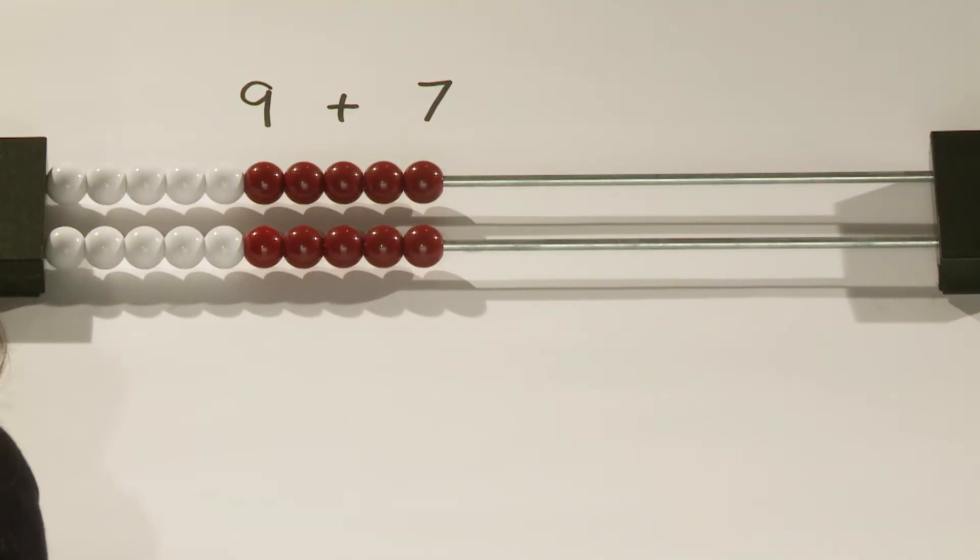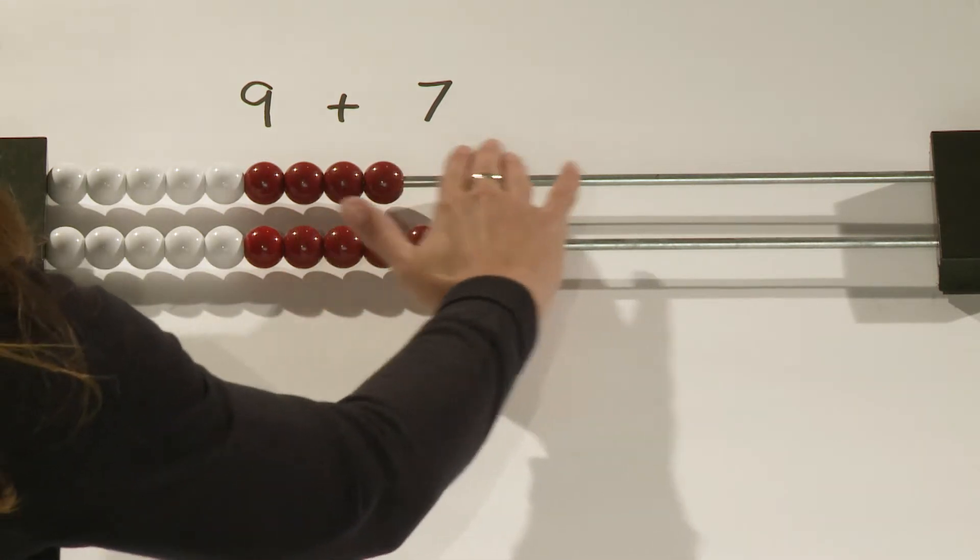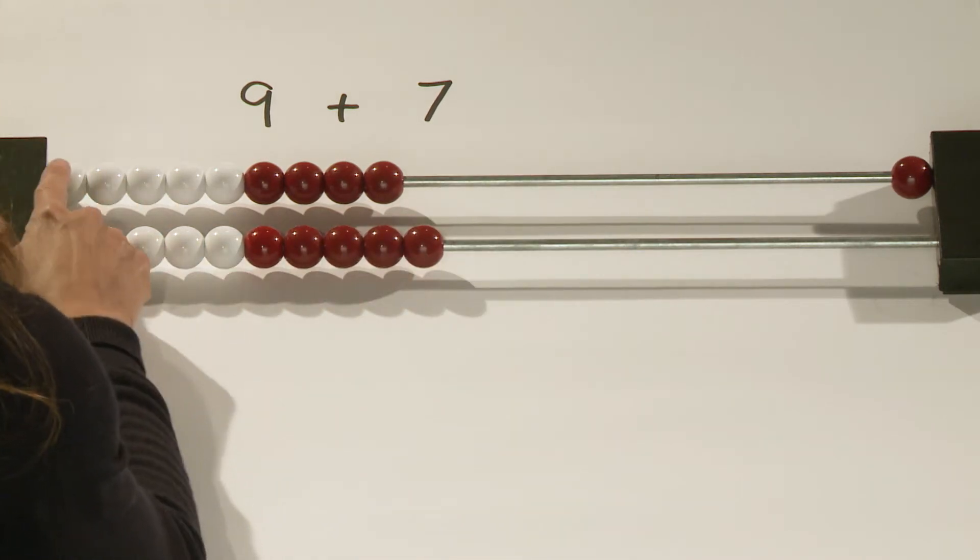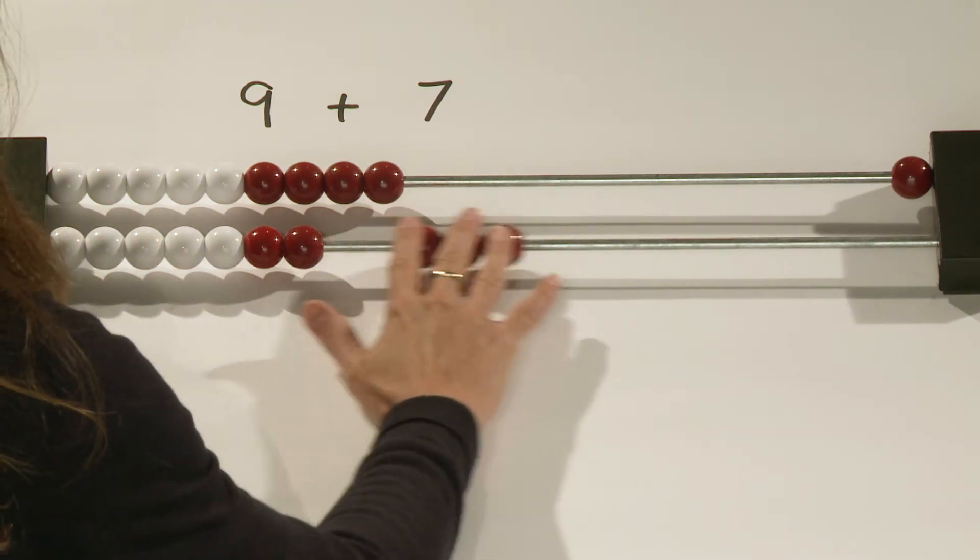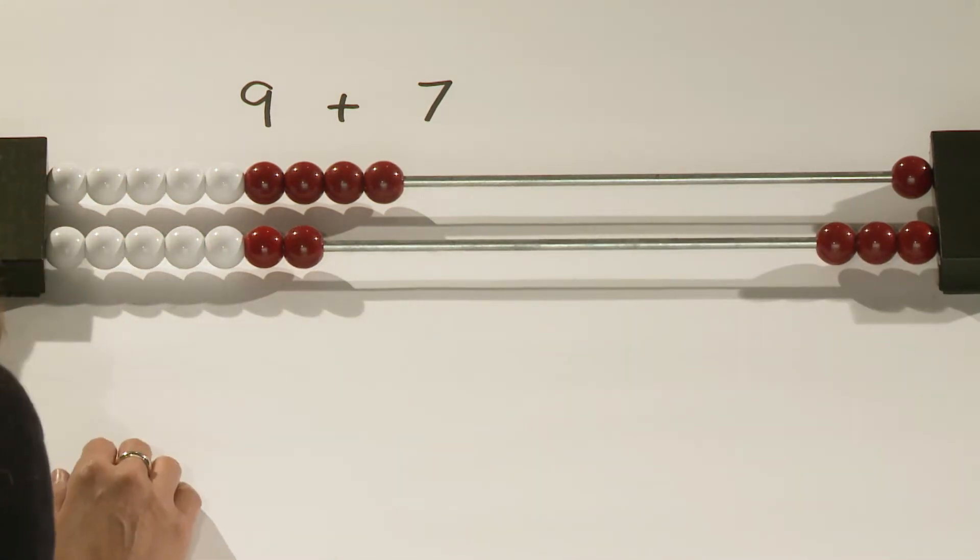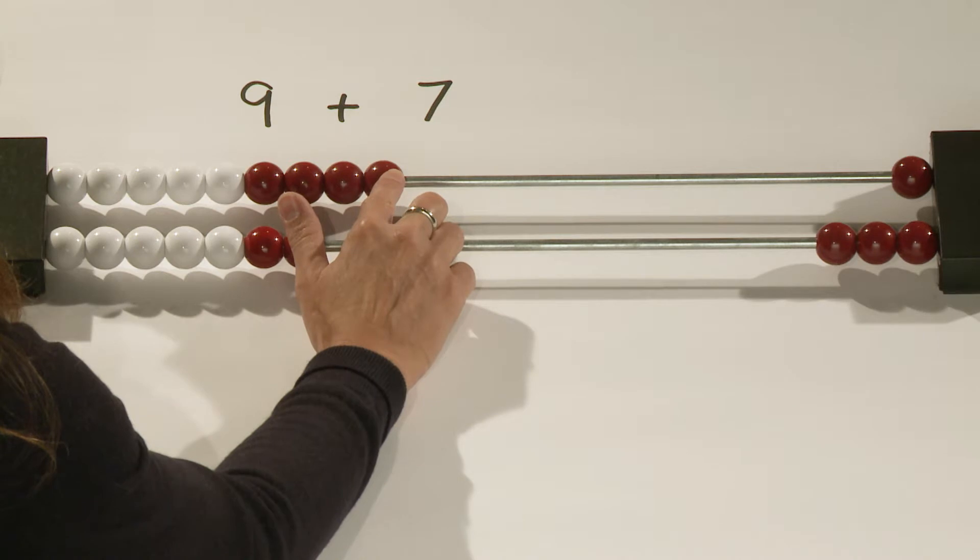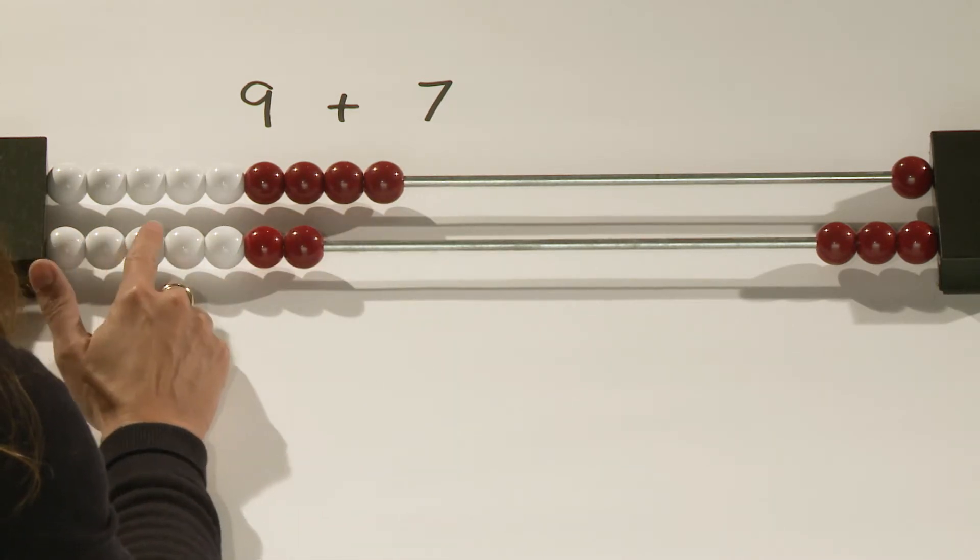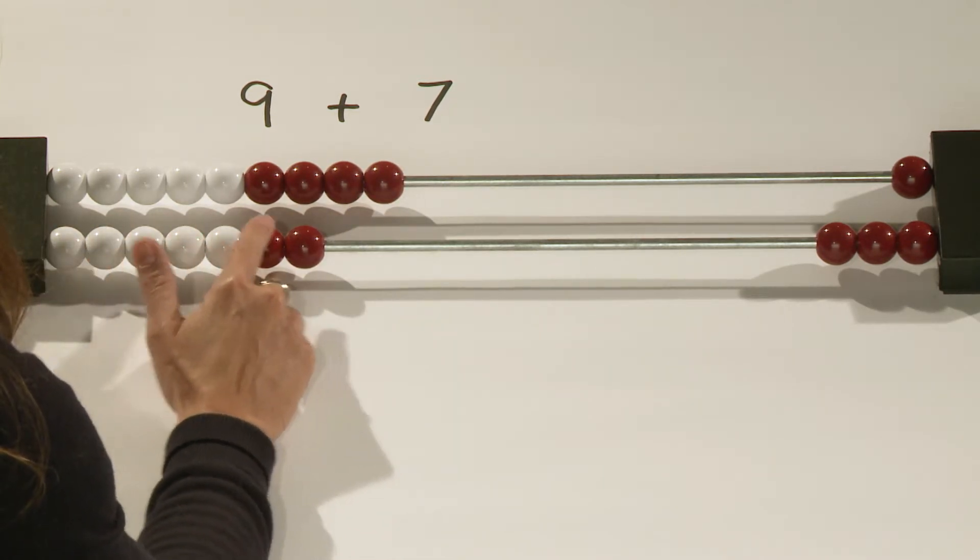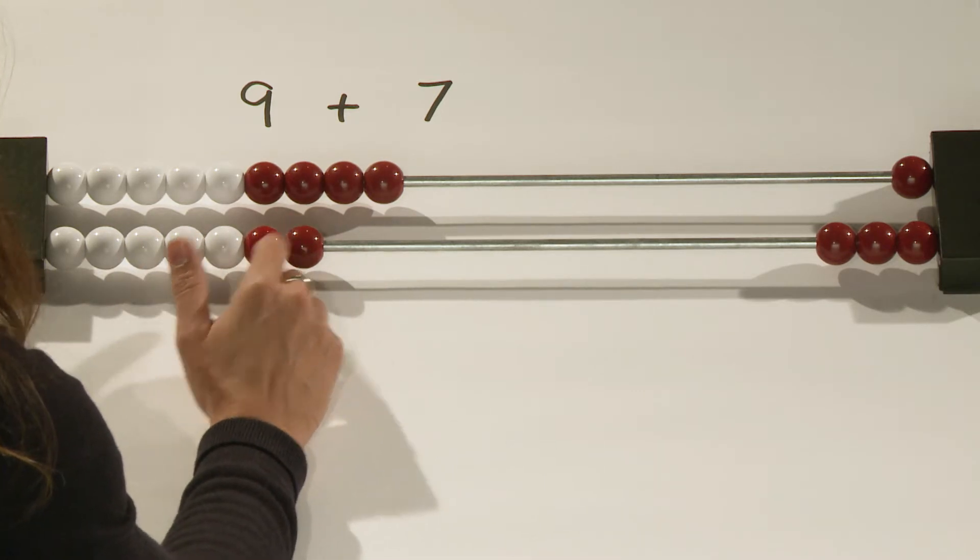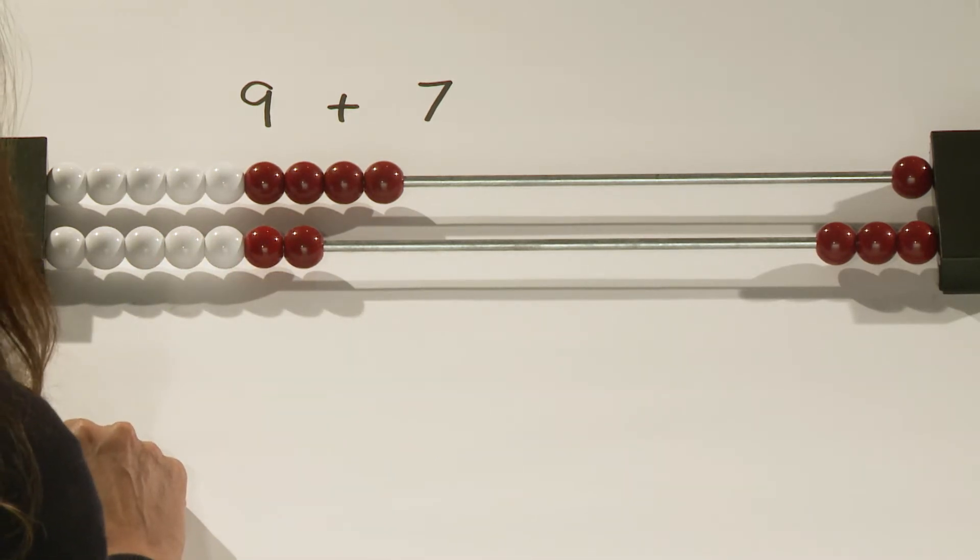Another tool students might use is the Math Rack or Rack and Rack. We can model 9 plus 7 by building 9 in the first row and 7 in the second row. To find the sum again, I can count on from 9 in the first row, 10, 11, 12, 13, 14, 15, 16 to find out that the sum is 16.